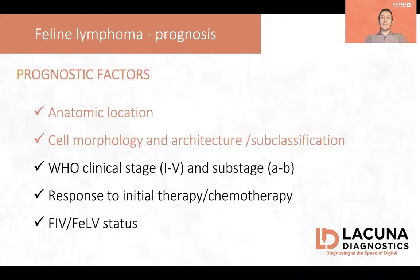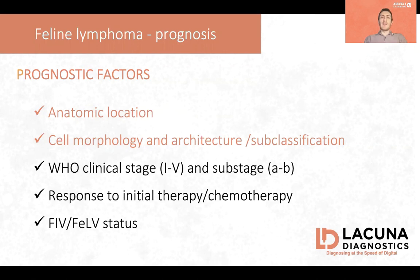Let's talk a little bit about lymphoma. The prognostic factors for feline lymphoma include the anatomic location, the cell morphology and architecture — essentially the sub-classification of lymphoma — the WHO clinical stage and sub-stage, the response to initial treatment, which is usually multi-agent chemotherapy, and the retroviral status, meaning the presence or absence of infections like FeLV and FIV. The anatomic location and identification of the lymphoma subtype are particularly important, and a generic classification of lymphoma shouldn't be considered sufficient.